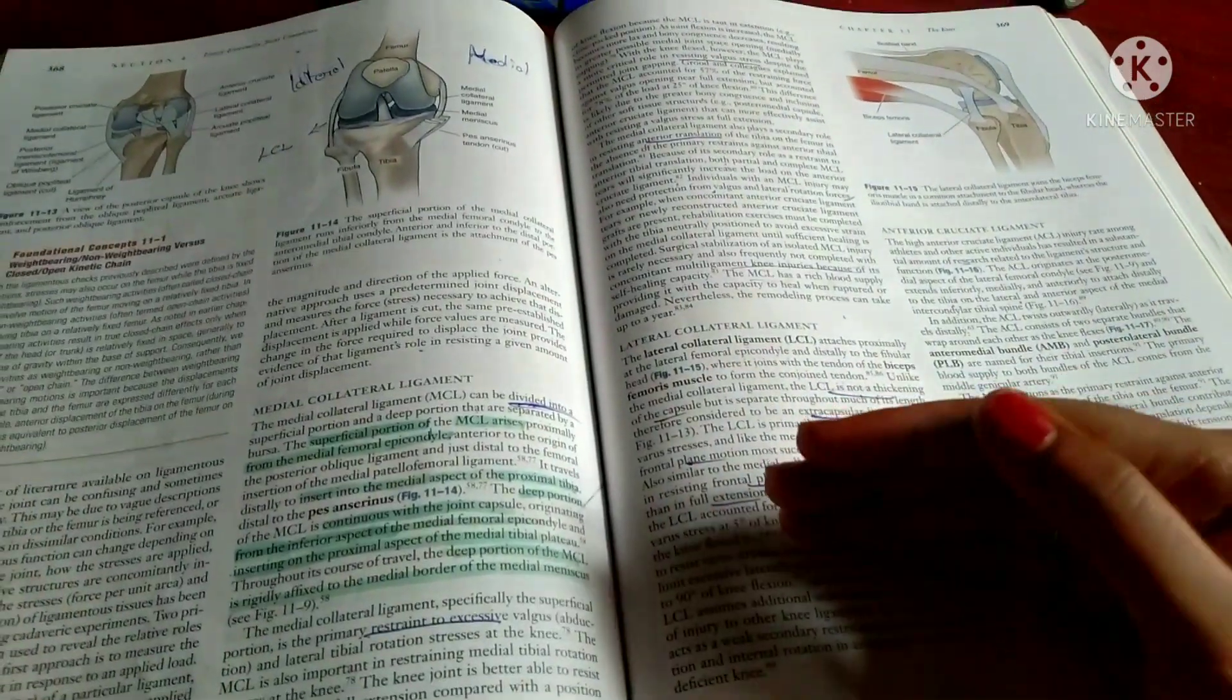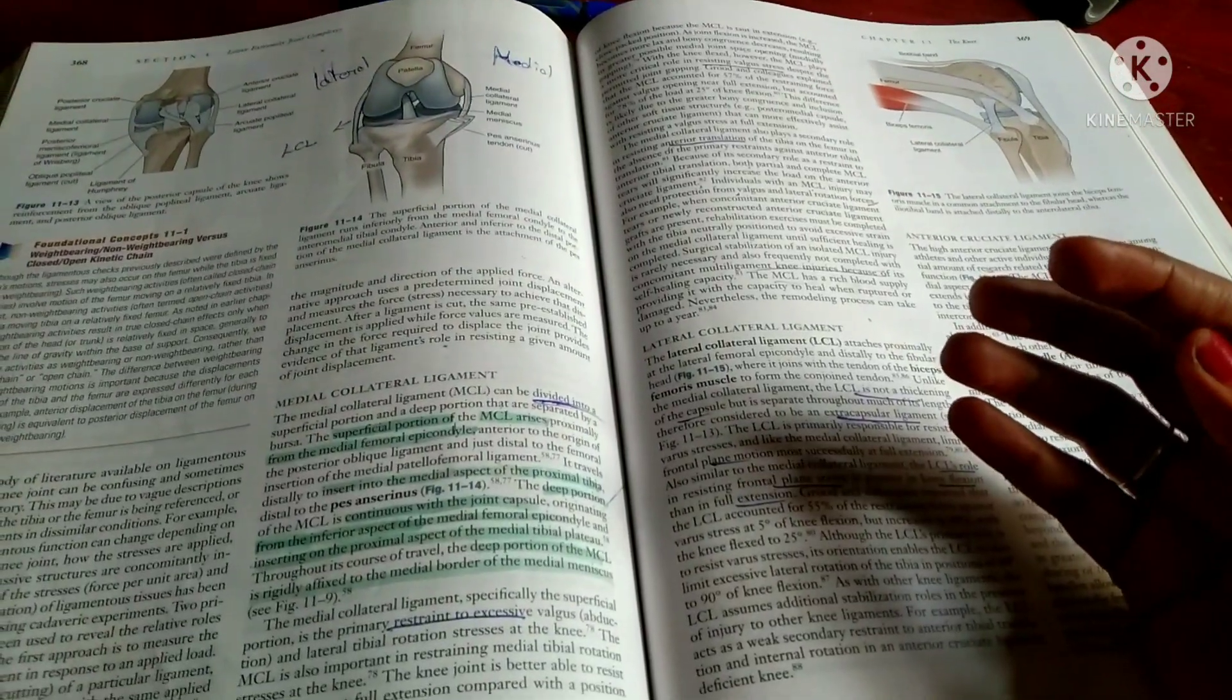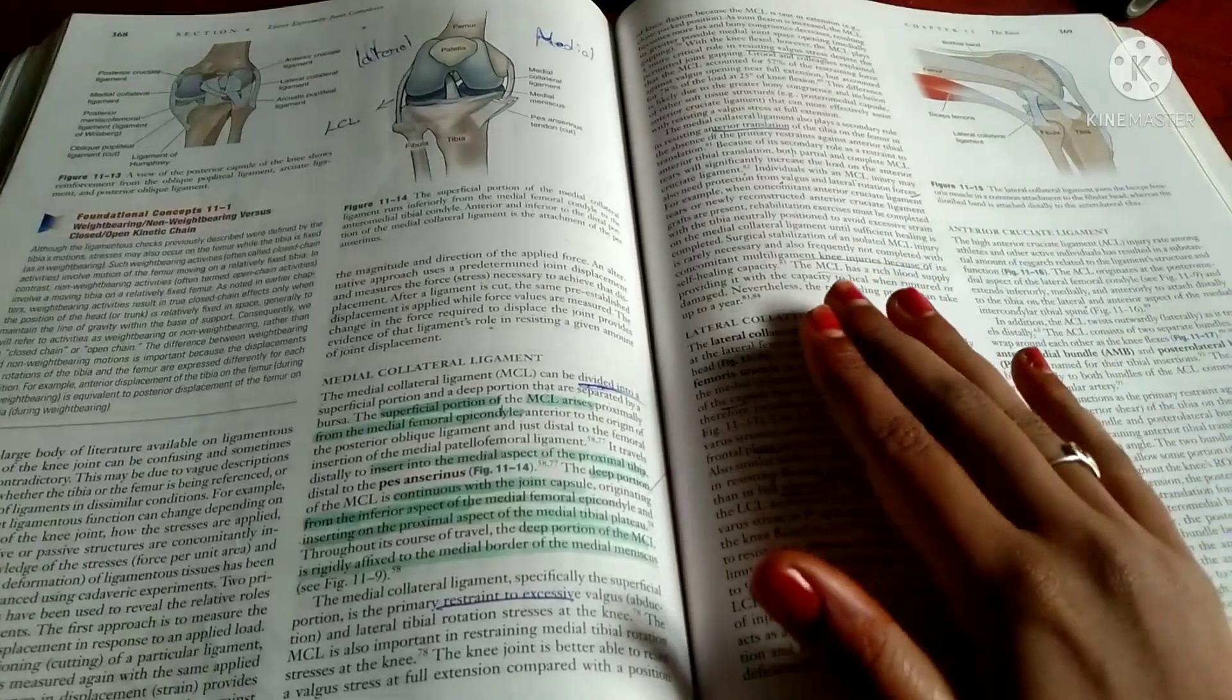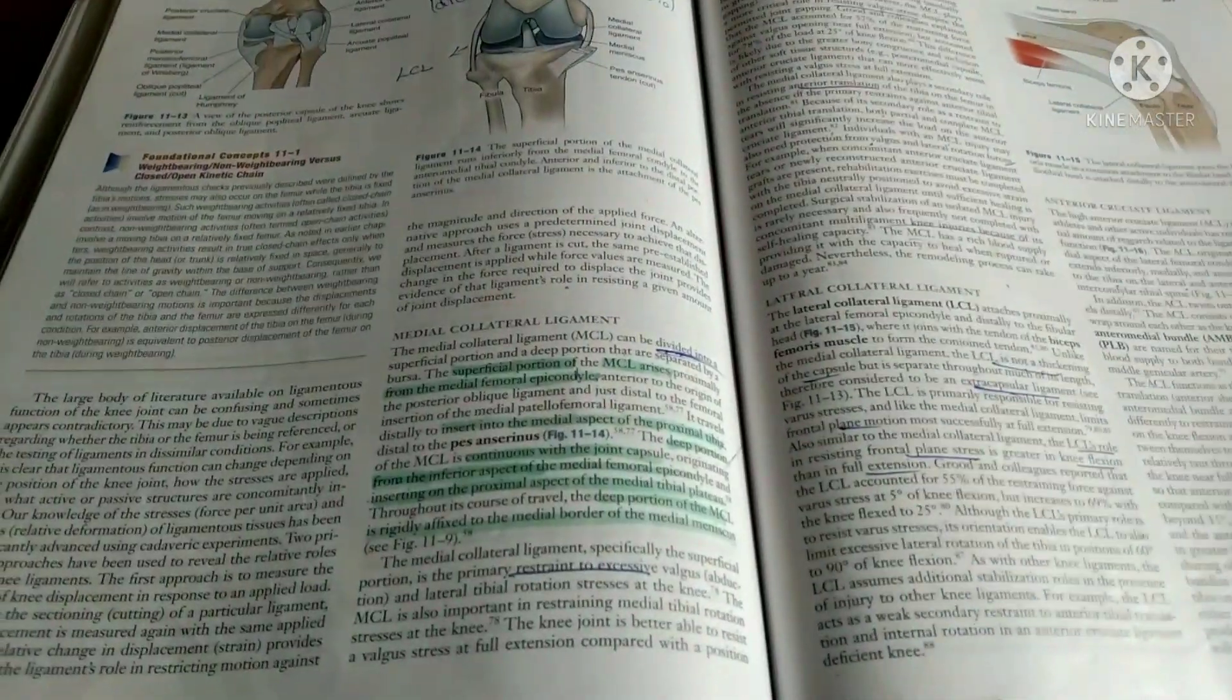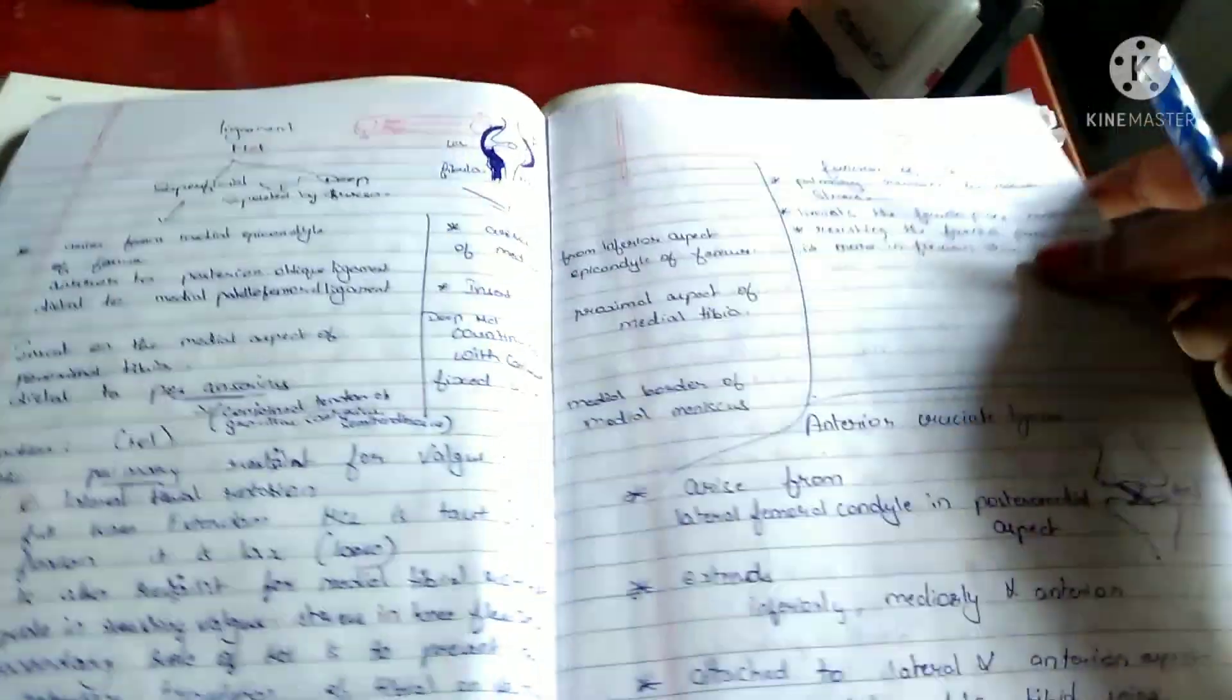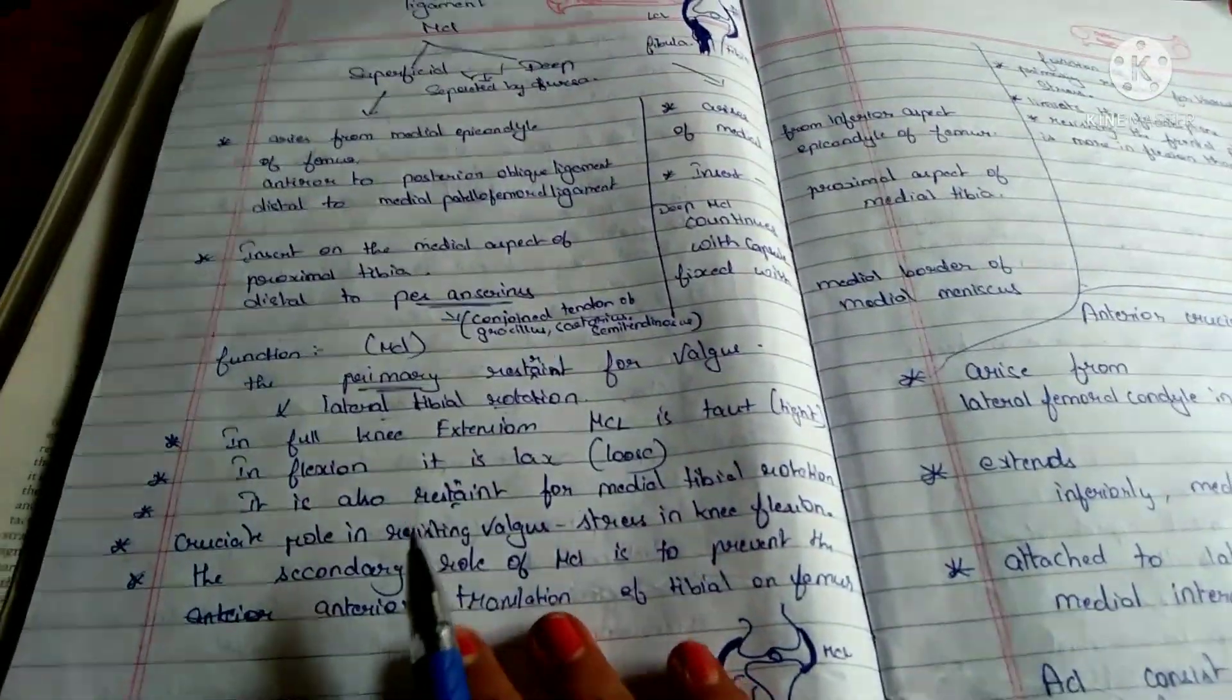Whenever you read something, compare it with the images. Study it with images so it will be really helpful and makes you understand easily where the structures are present, where it arises, how the function is occurring. Everything will be easier more than just through words. When we visualize it, it will be much easier.